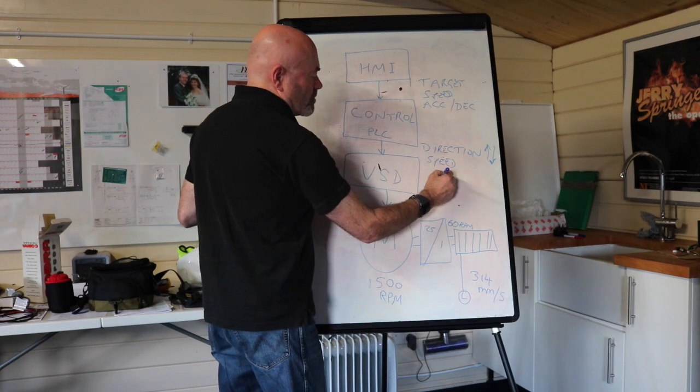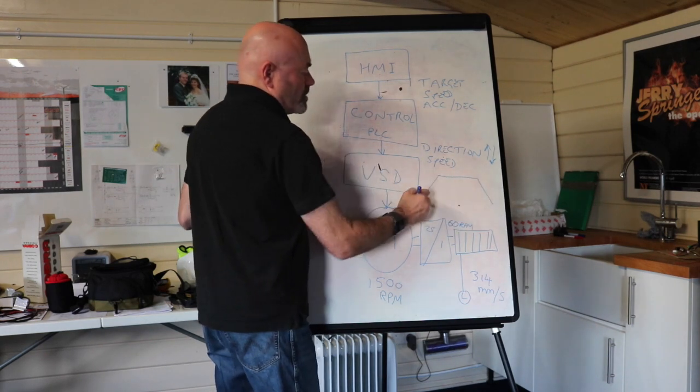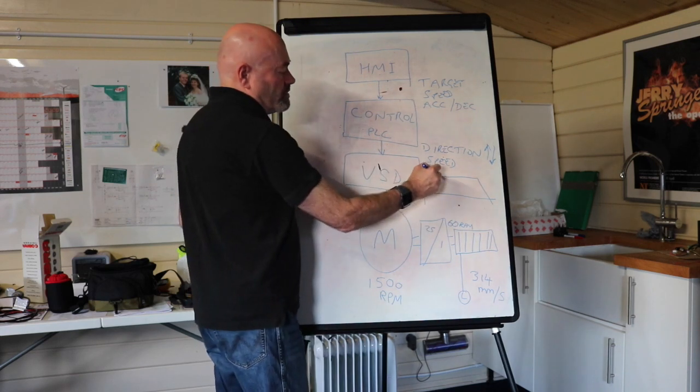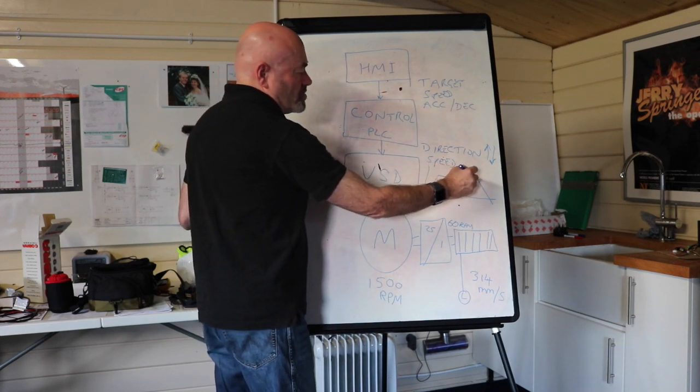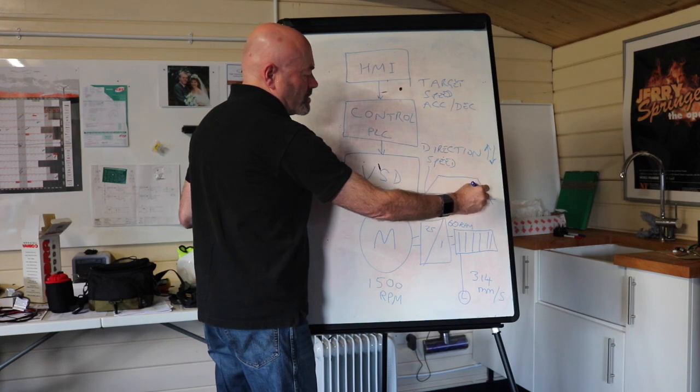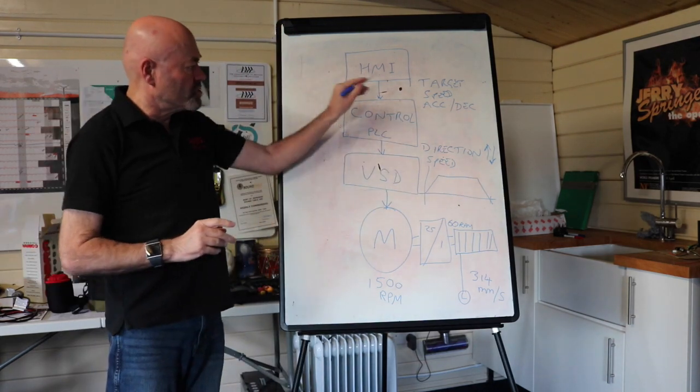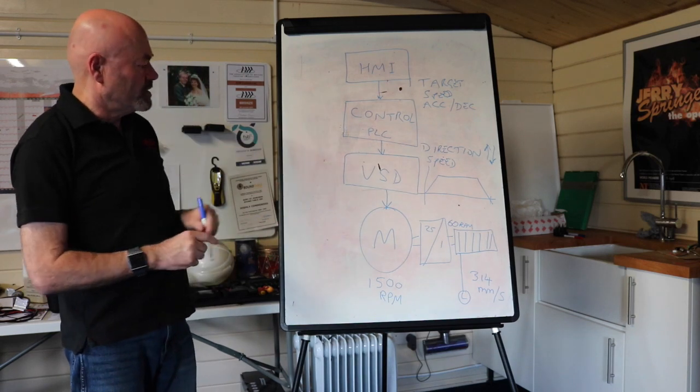And the output from the control system will be a trapezoidal move. Accelerate, travel at speed, choose when to decelerate, decelerate, stop, land at position. But how does it know it's reached position? At the moment, it doesn't.